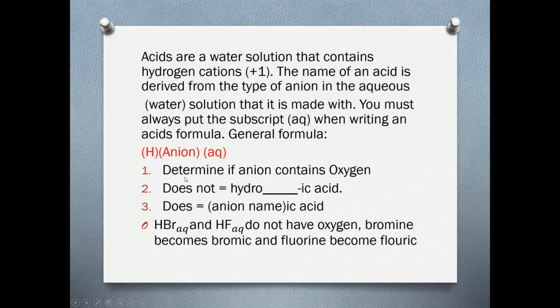The first thing we have to do is determine if the anion contains oxygen. If I look at this, my anion is bromine here. There's obviously no oxygen. If it does not have oxygen, the way we name it is we put the prefix hydro and then we take the short name of the anion, add IC to it, and then acid. So this would be hydrobromic acid and this would be hydrofluoric acid.